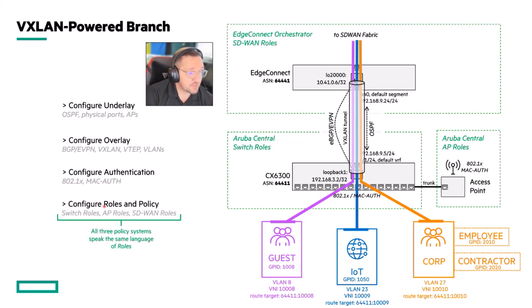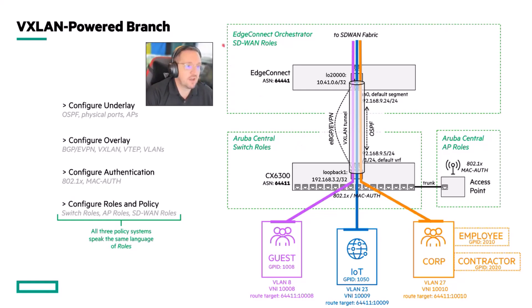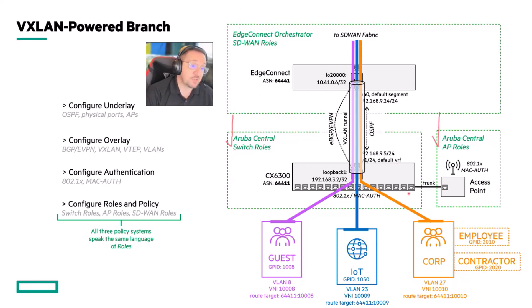The very last step is to configure the roles and the policy. This is probably the trickiest part, because there are multiple places where roles manifest — as I mentioned before. There are SD-WAN roles, switch roles, AP roles, and also gateway roles.